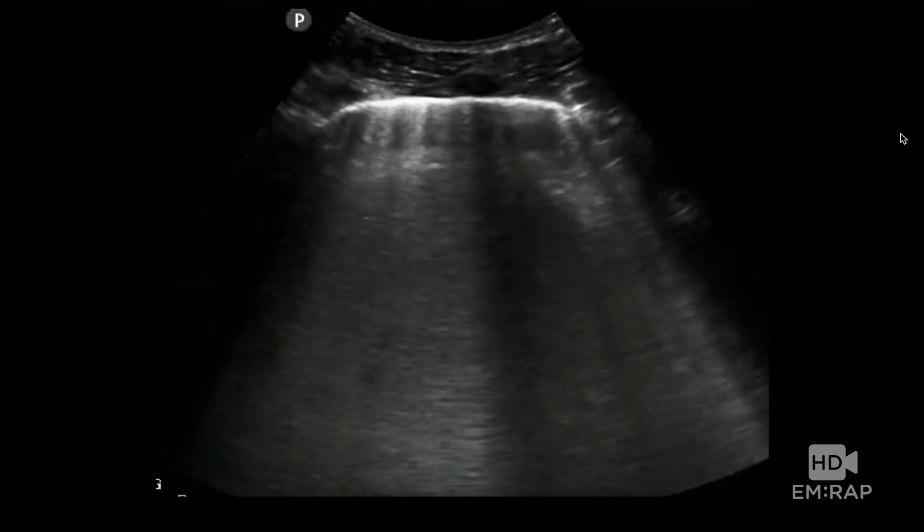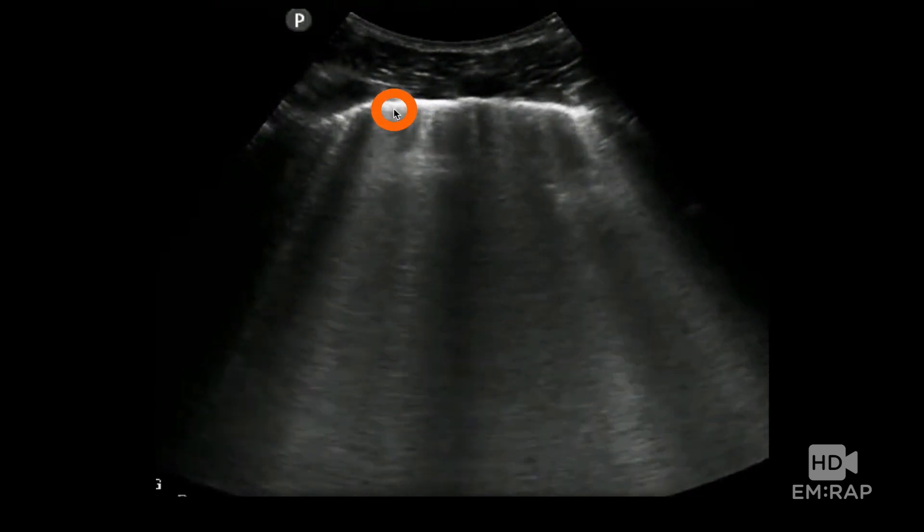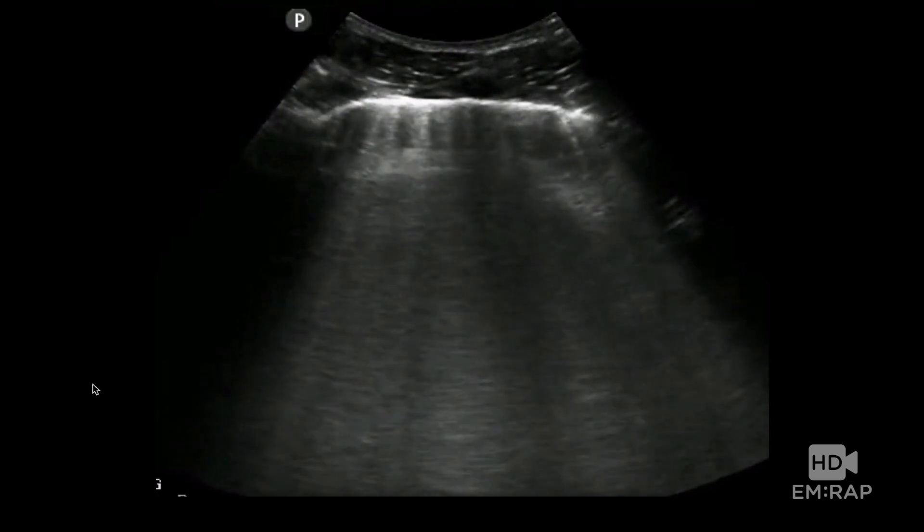So these are B-lines. So this is the pleural line right here, and you can see these vertical artifacts starting from the pleural line extending all the way down. This implies that the patient has pulmonary edema.